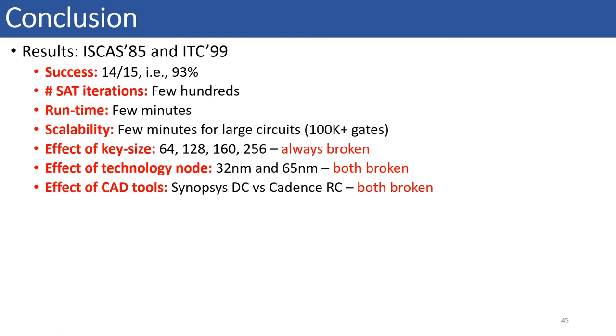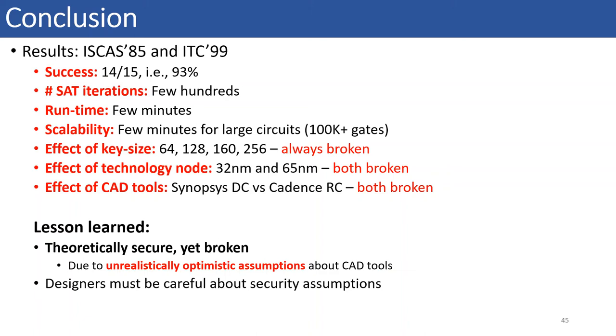To summarize, we were successfully able to break 14 out of 15 circuits for all the three attacks. With IFS and KBM as pre-processing steps, the number of SAT iterations have reduced to few hundreds, which in turn reduced the runtime of the attack. We also verified the efficacy of our attacks on different key sizes, technology nodes, and CAD tools. Hence, we conclude that although the defense techniques are theoretically secure, the hardware implementation leaves structural traces, which can then be exploited by an attacker to recover the original design. Thus, through this work, we caution the designers about the cyclical assumptions when implementing an algorithmically secure defense in actual hardware.